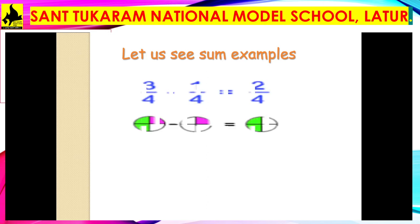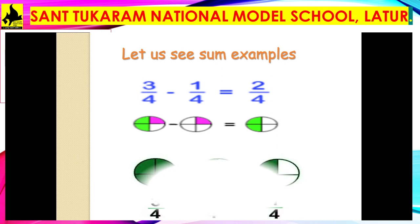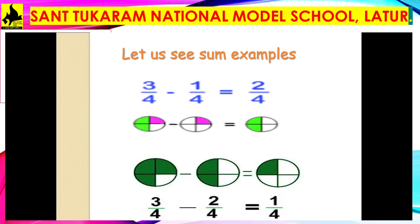Now we will see examples of subtraction. Here, 3/4 − 1/4 = 2/4. In subtraction as well, do not subtract the denominators — only check them. If the denominators are the same, meaning they are like fractions, then subtract the numerators and write the difference over the same denominator. Second example: 3/4 − 2/4 = 1/4.